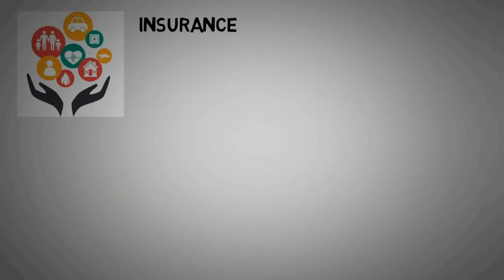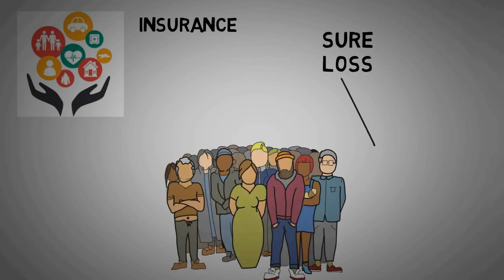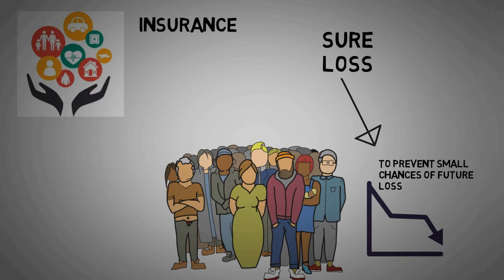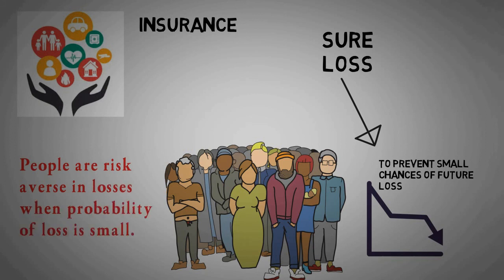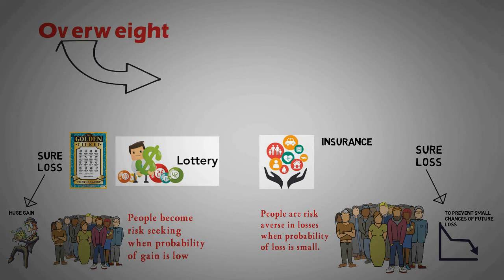While in insurance, people are willing to take sure loss in present in order to prevent small chances of future big losses. So people are risk averse in losses when probability of loss is small. As per prospect theory, people are giving overweight and attention to small probability of potential huge gain or huge losses.